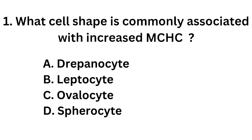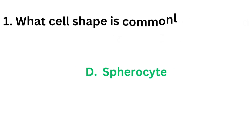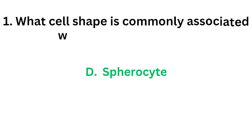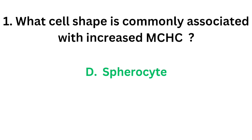Question number 1. What cell shape is commonly associated with increased mean cell hemoglobin concentration? Option A: Drepanocyte. Option B: Leptocyte. Option C: Ovalocyte. Option D: Spherocyte. The correct answer is Option D, Spherocyte. Spherocyte is commonly associated with increased MCHC.